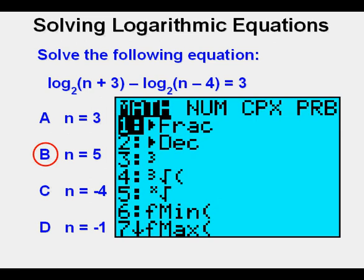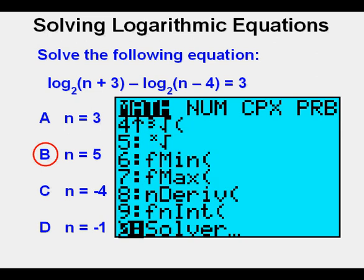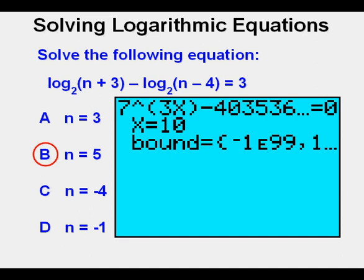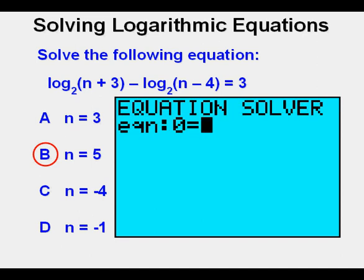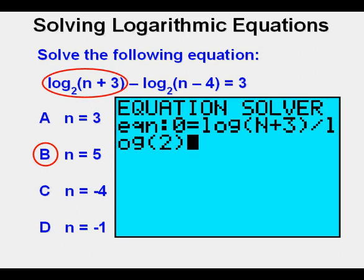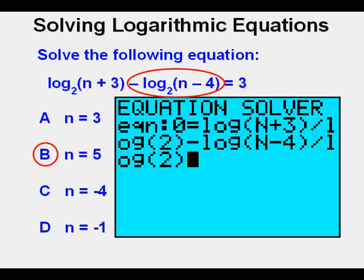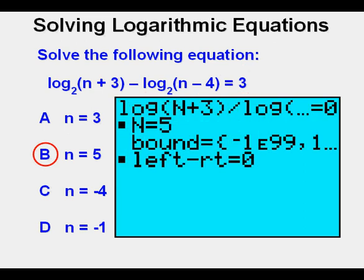Let's look at using equation solver to work the problem. First press math. Scroll down to choice 0, solver. Press enter. Clear out the last equation by pressing the up arrow, then clear. Now we enter the first part of the equation using the change of base formula. We have the log of quantity n plus 3 divided by the log of 2. And then we enter minus the log of quantity n minus 4 divided by the log of 2. And finally to solve for 0 on one side we do it by subtracting 3. Then we solve by pressing alpha enter, then alpha enter. And we again get the answer 5. Note that we were able to use n in this mode and did not have to switch to x.